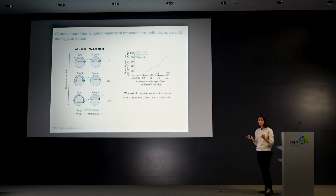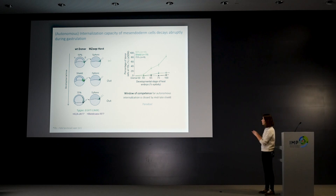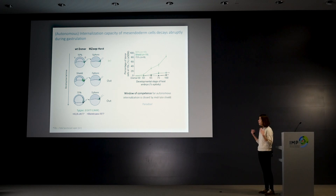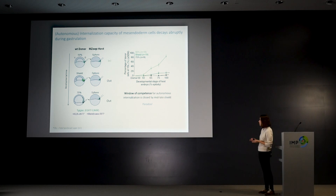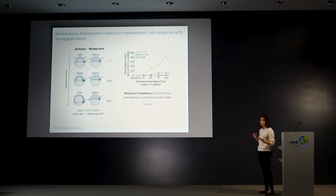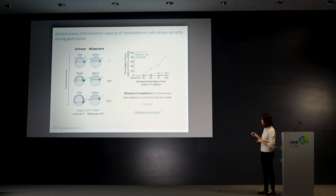We had a small paradox: in the transplantations, the later mesendoderm cells could not go inside, but in the actual embryo all mesendoderm cells have to go to the inside because they give rise to internal organs. How could we reconcile our observations in the transplants versus what we see in vivo?